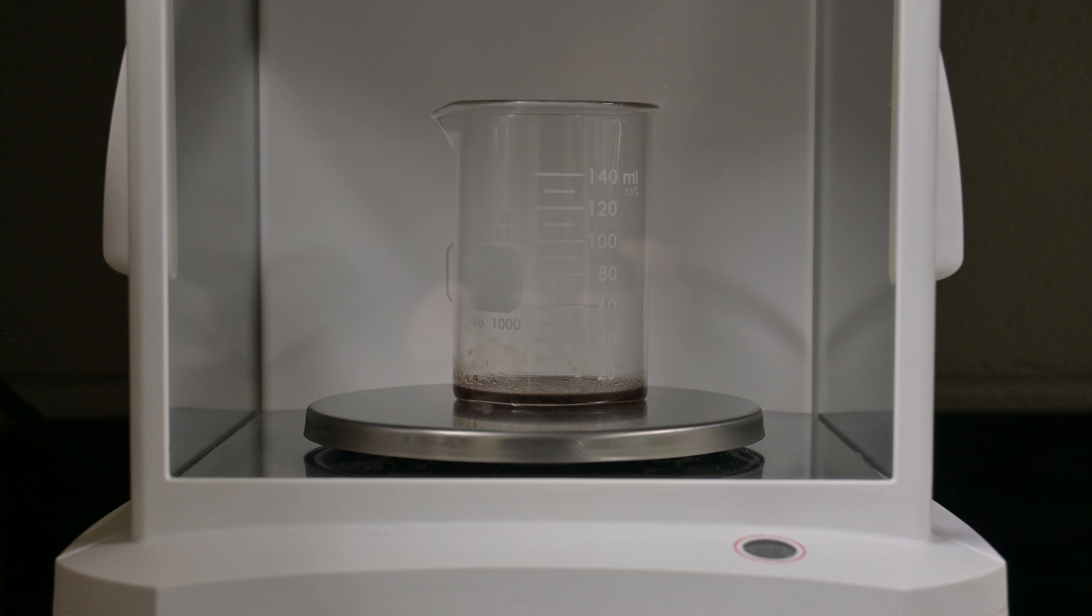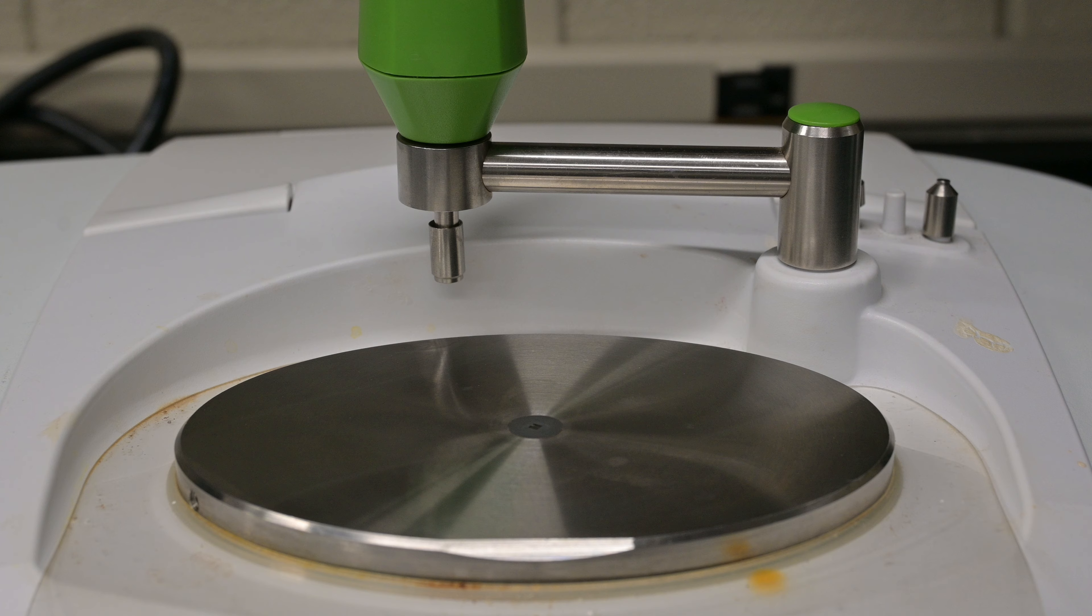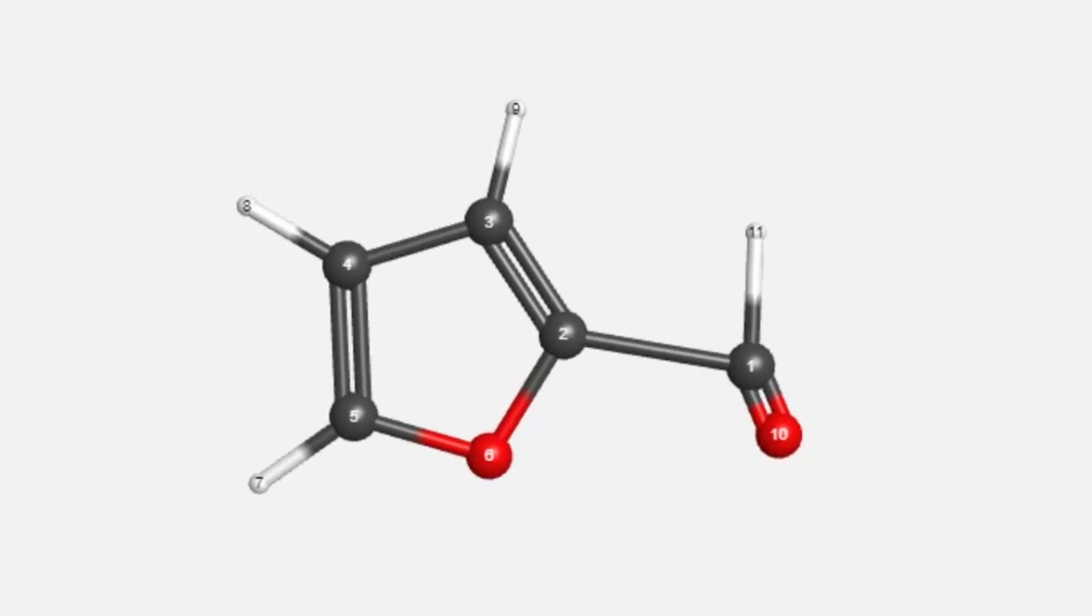We got about 1.6 grams of product, but now how do we know how pure it is? In chemistry, we use analytical instruments to uncover the structure and purity of molecules. There are a lot of powerful options: IR for seeing functional groups, NMR for seeing structure.